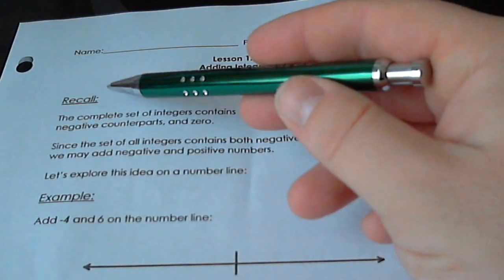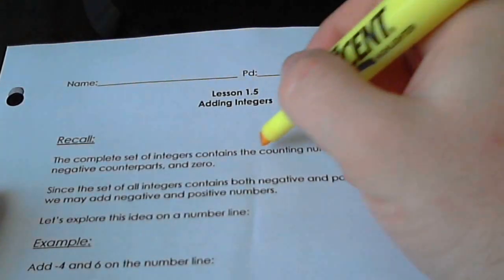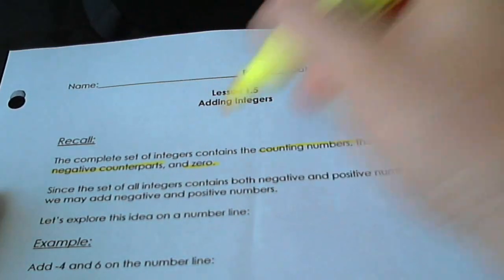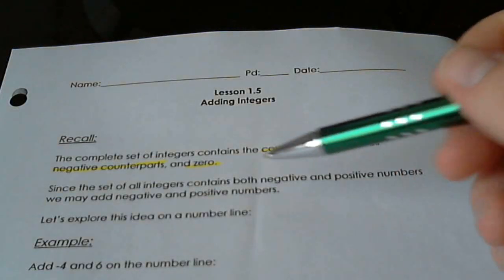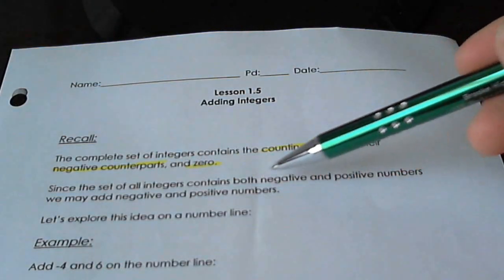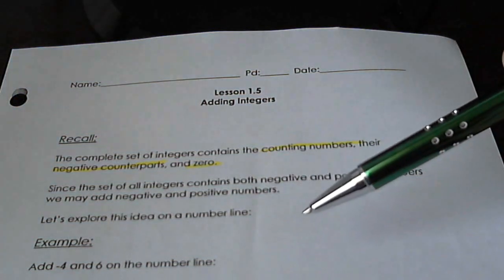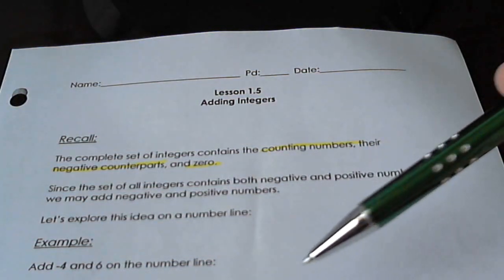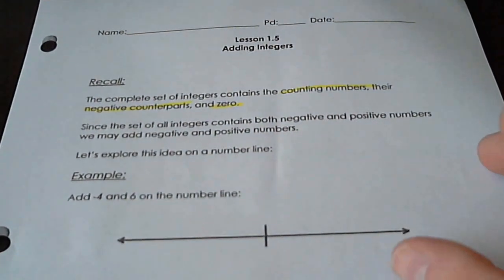Before we start, we need to recall that the complete set of integers contains the counting numbers, their negative counterparts, and zero. All integers contain the counting numbers, their negative counterparts, and zero. Since a set of all integers contains both negatives and positives, we're allowed to add those. So what we're going to do here is explore that idea of adding negatives and positives.